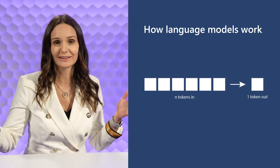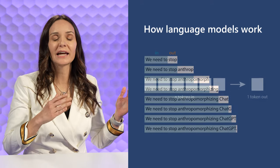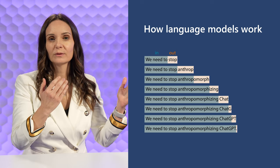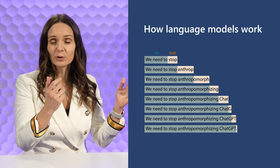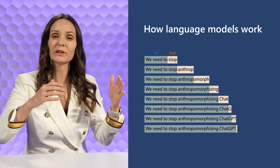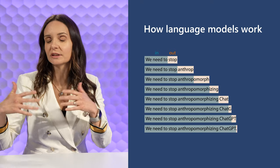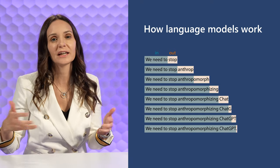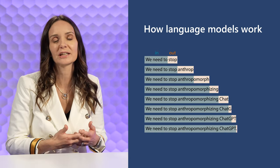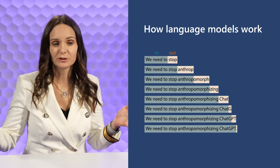You get a bunch of tokens out — a lot of text — and that's because this idea gets applied in a sliding window kind of way. You get N tokens in, you get one token out, and then that token out gets included in the tokens in for the next iteration. Then you get another token out, and you keep repeating this until you reach some stopping condition and the model is done generating the text you wanted.